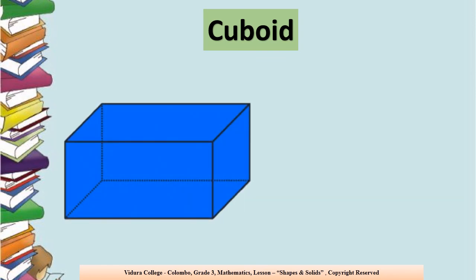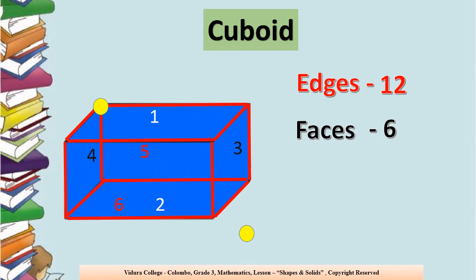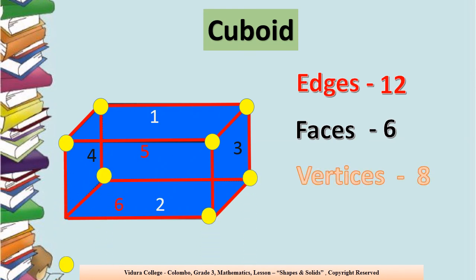Cuboid. How many edges are there in a cuboid? There are 12 edges — we'll count: 1, 2, 3, 4, 5, 6, 7, 8, 9, 10, 11, 12. And how many faces are there in the cuboid? There are 6 faces: 1, 2, 3, 4, 5, 6. And how many vertices are there in a cuboid? There are 8 vertices: 1, 2, 3, 4, 5, 6, 7, 8.